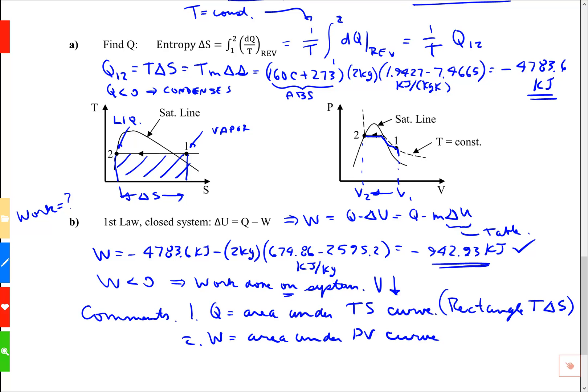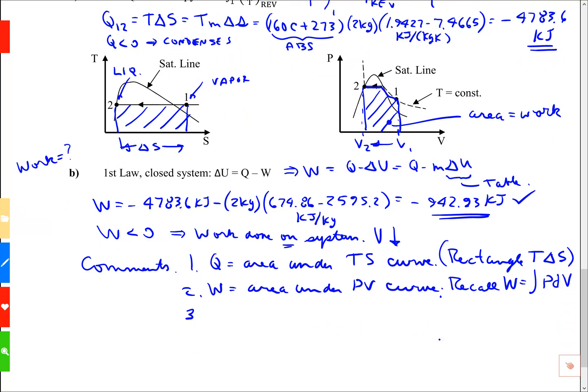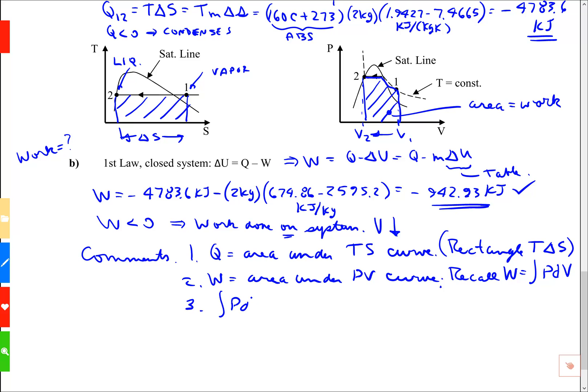Rectangle TΔS in this case. Another comment is that the work is the area under a PV curve. So in this case, here's V1, here's V2. The area here, this is the work. And I could say recall work equals integral PdV. Now we didn't use that integral here. So we'll say comment 3 would be integral PdV not useful because P is unknown during the process. And we would need P as a function of volume to work that integral.